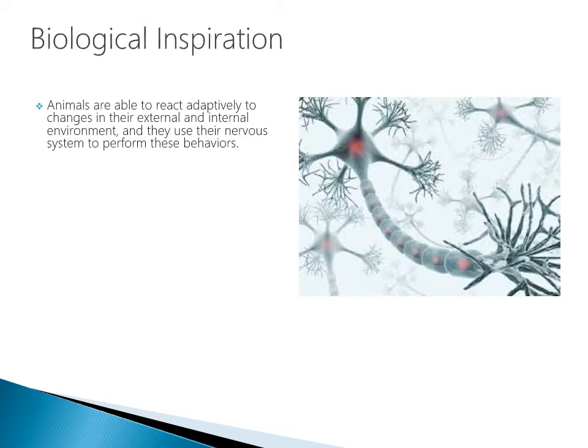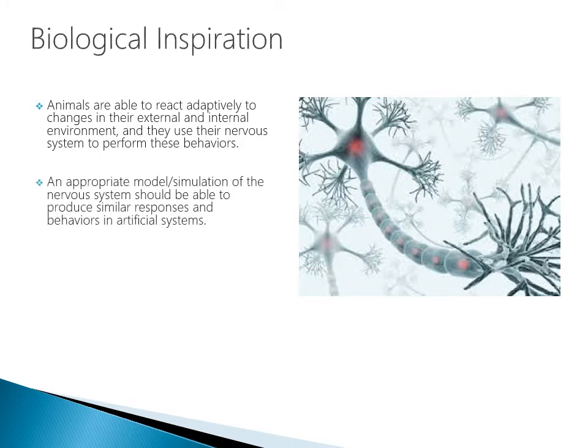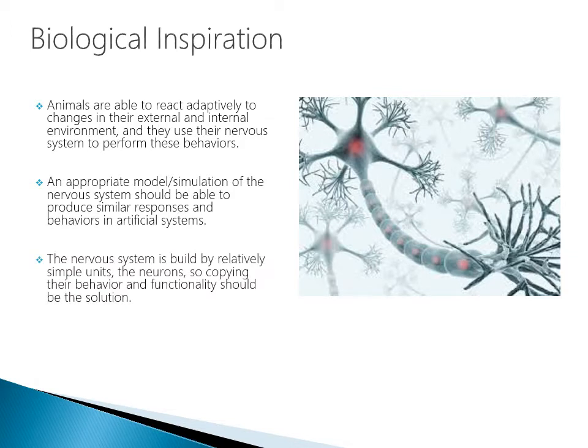Animals are able to react adaptively to changes in their external and internal environment, and they use their nervous systems to perform these behaviors. An appropriate model or simulation of the nervous system should be able to produce similar responses and behaviors in artificial systems. The nervous system is built by relatively simple units — the neurons — so copying their behavior and functionality should be the solution. If we're trying to mimic a biological process, starting with the neurons and really understanding how they're functioning in the brain has led to the development of this technique.